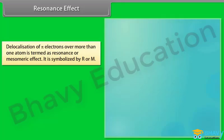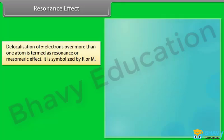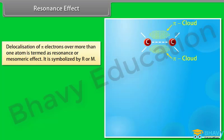Delocalization of pi electrons over more than one atom is termed the resonance or mesomeric effect. It is symbolized by capital R or capital M and is of two types.